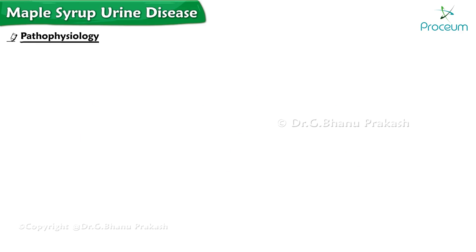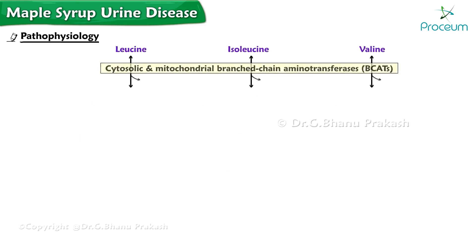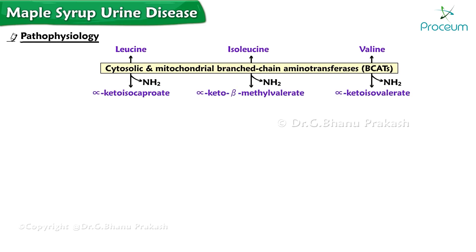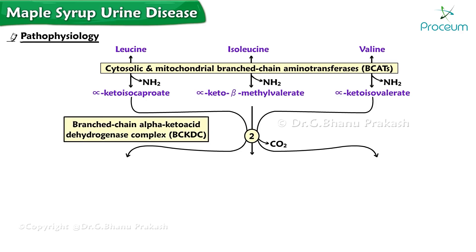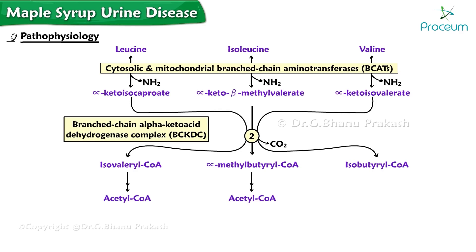In the first step of branch-chain metabolism, branch-chain amino acids are converted by cytosolic and mitochondrial branch-chain amino transferases, BCATs, to their respective alpha-ketoacids. The alpha-ketoacids are subsequently decarboxylated by the branch-chain ketoacid dehydrogenase complex, BCKDC, to yield isovaleryl coenzyme A, alpha-methylbutyryl coenzyme A, and isovaleryl coenzyme A, respectively, which eventually result in acetyl coenzyme A, acetoacetate, and succinyl coenzyme A.